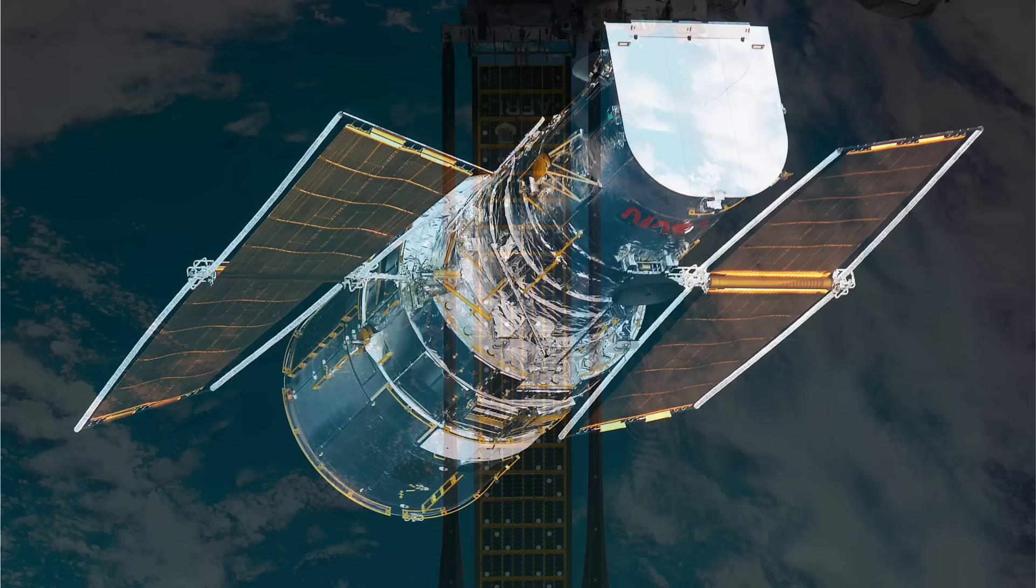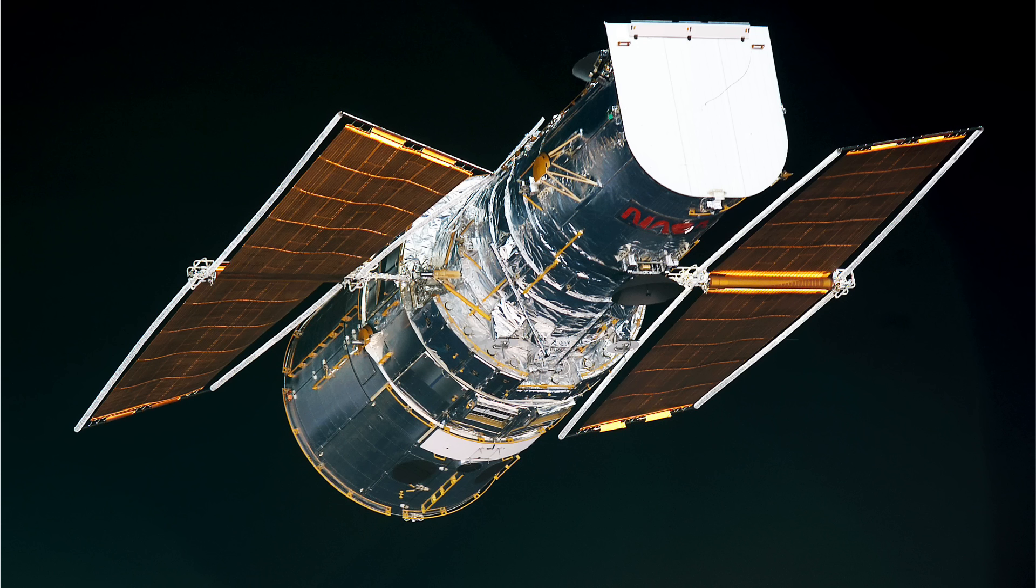While the United States government has researched solar since the late 1950s, that work was in the context of space travel. From 1950 to 1970, federal R&D in Earth-based solar energy averaged less than $100,000 a year.